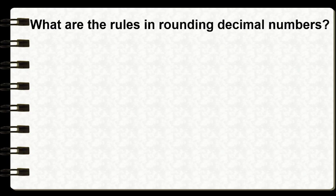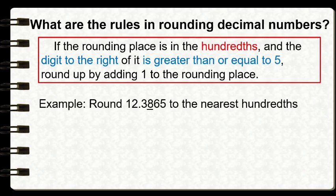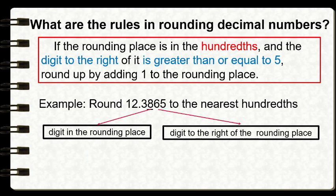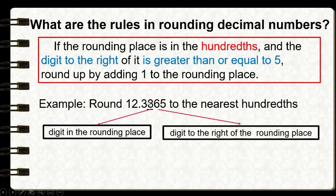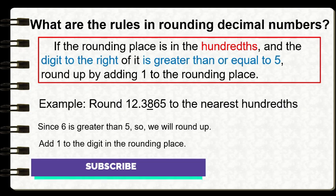In rounding decimal numbers there are some simple rules that we need to consider. For example, round twelve and three thousand eight hundred sixty-five ten-thousandths to the nearest hundredths. In our example, eight is the digit in the rounding place — it is the hundredths — and six is the digit to the right of the rounding place. The rule states that if the digit to the right of the rounding place is greater than or equal to five, we are going to round up by adding one to the rounding place.